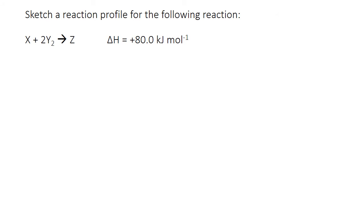In this second example we're needing to sketch a reaction profile for the following reaction where X plus 2Y2 gives Z. And we can see here that the delta H is plus a positive 80 kilojoules per mole, and this means the opposite of before, that the reaction is endothermic.